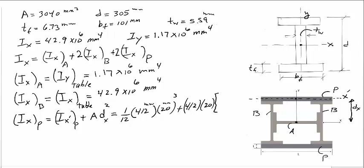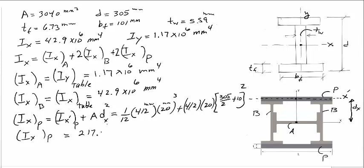The distance dx is half the height of the wide flange profile — 305 mm divided by 2 — plus half the plate thickness, which is 10 mm, with the entire quantity squared. Simplifying this equation, the moment of inertia with respect to the X axis of each plate is 217.86 × 10⁶ mm⁴.